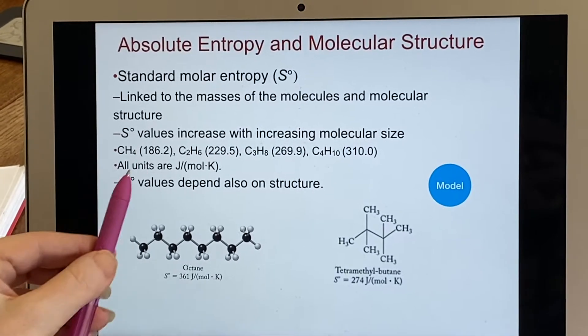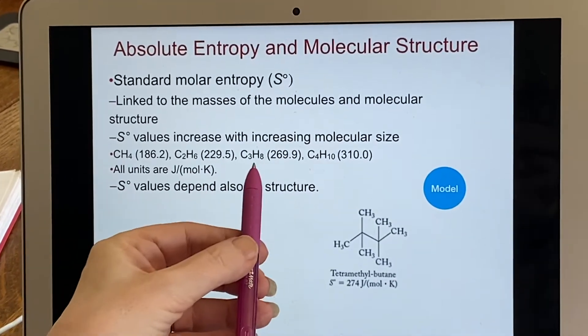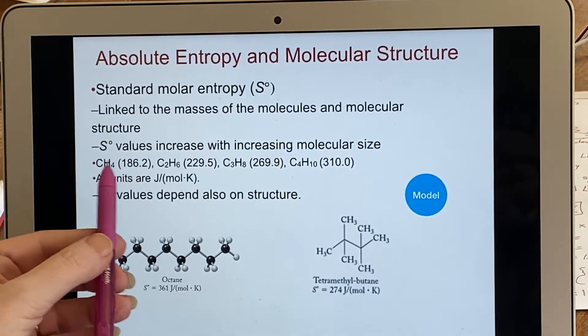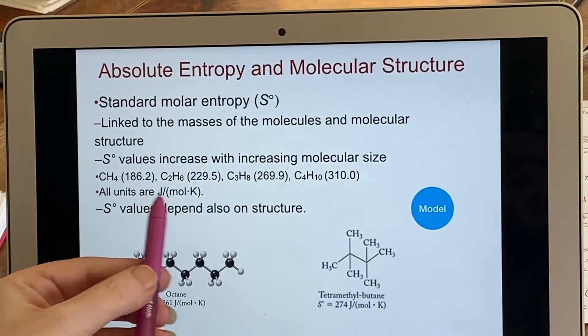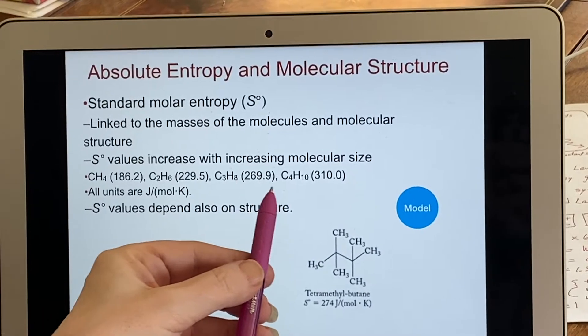Here we have some hydrocarbons. We have methane, ethane, propane, and butane. As you can see, as you go up, increasing the numbers of carbons and hydrogens, the value of S is going to go up as well.